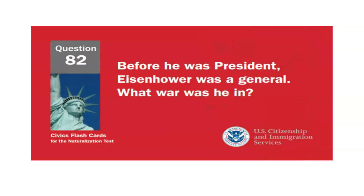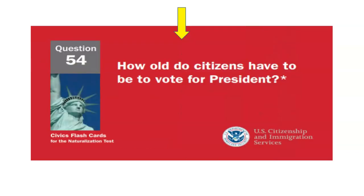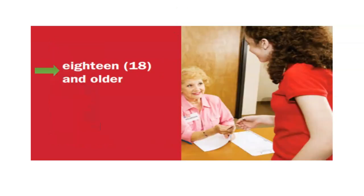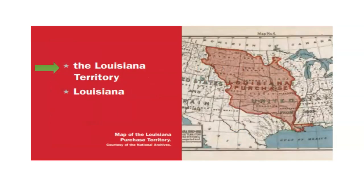Before he was president, Eisenhower was a general. What war was he in? World War II. How old do citizens have to be to vote for president? 18 and older. What territory did the United States buy from France in 1803? The Louisiana Territory.